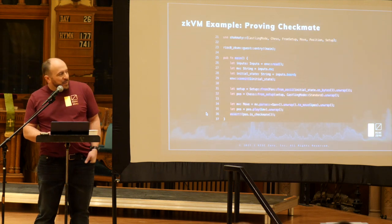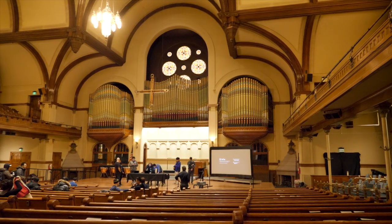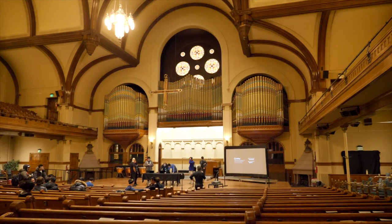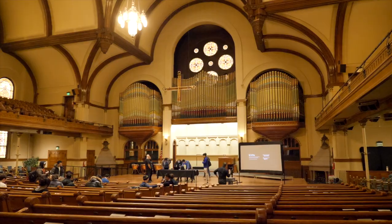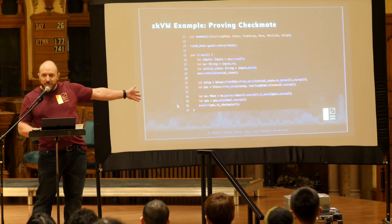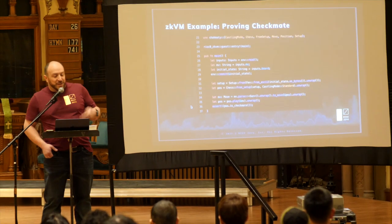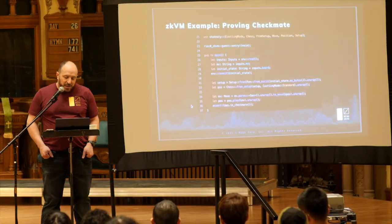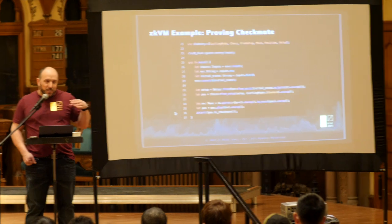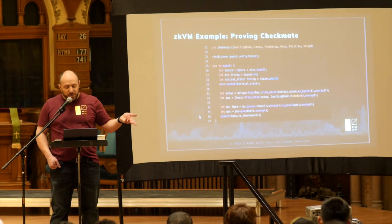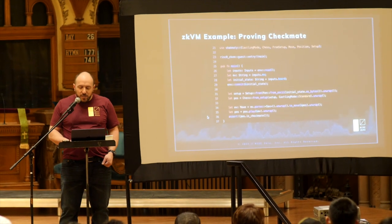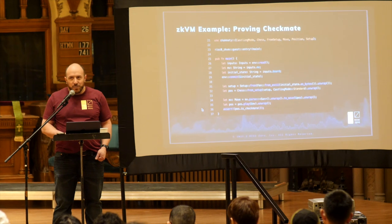This is just one example leading into the main content of the talk. This is an example of code you can run in the ZK-VM that lets you prove that you know there's a checkmate on a chessboard by importing a chess library that somebody else wrote in Rust. It's an example of having public input and a private input — a move that results in checkmate — and then this program produces a proof of it.